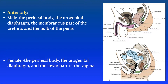Anteriorly, in a man, it is related to the perineal body, the urogenital diaphragm, the membranous part of the urethra, and the bulb of the penis. While in the female, it is related to the perineal body, the urogenital diaphragm, and the lower part of the vagina.